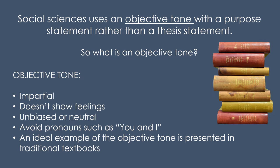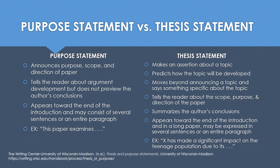The objective tone allows readers to learn facts and form their own opinions. When writing in APA style, you should also use a purpose statement instead of a thesis statement. This is why we don't typically write humanities papers in APA style. The two styles are completely different, with MLA using a subjective tone and APA using an objective tone. A thesis statement makes a specific assertion about a topic and predicts how it will be developed. Unlike a thesis statement, a purpose statement announces the scope and the direction of the paper, but it does not reveal the author's conclusions.